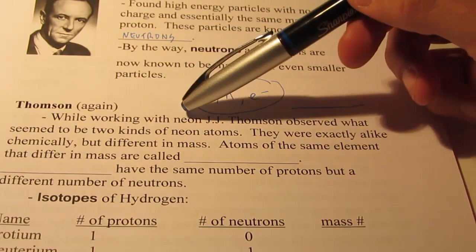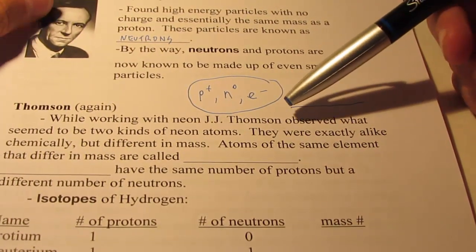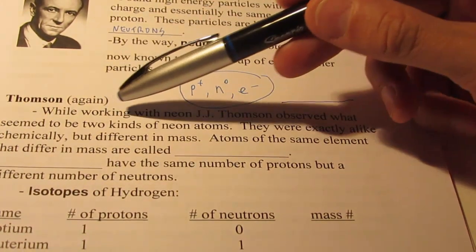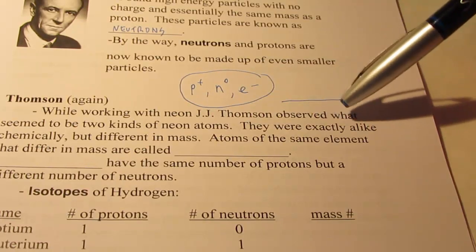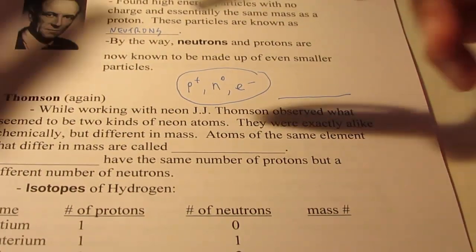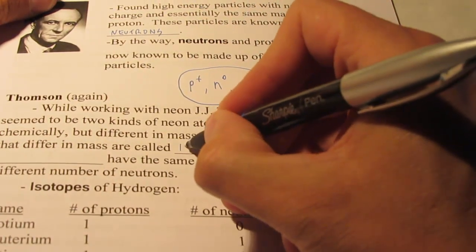While working with neon, J.J. Thomson, the plum pudding guy who discovered the electron and the proton, observed what seemed to be two kinds of neon atoms. They were exactly alike chemically but different in mass. Atoms of the same element that differ in mass are called isotopes.